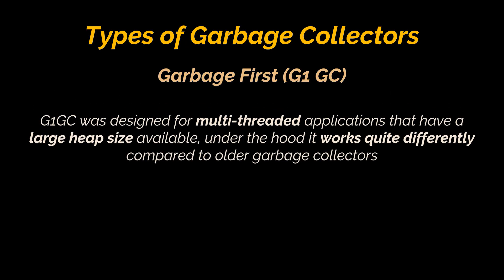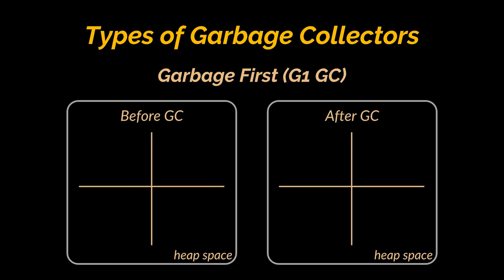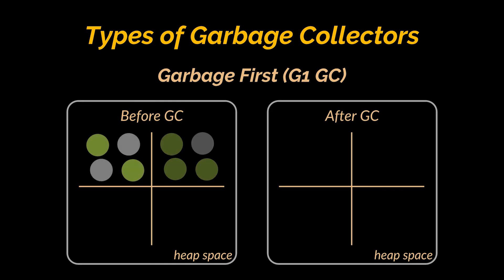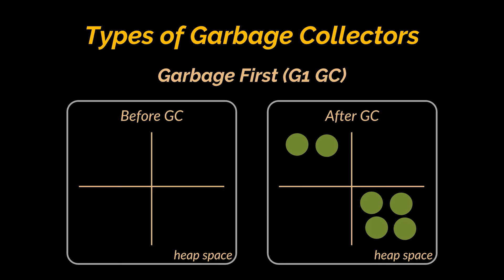The Garbage First, or G1GC, was chosen as the default collector by Java and was intended as a replacement for CMS. It was designed for multi-threaded applications with a large heap size. It is parallel and concurrent like CMS but works quite differently under the hood. Although G1 is generational, it does not have separate regions for young and old generations; instead, each generation is a set of regions, allowing flexible resizing of the young generation. It partitions the heap into equal-size regions and uses multiple threads to scan them. After the marking phase, G1 knows which regions contain the most garbage, and if minimal pause times are desired, G1 can choose to evacuate only a few regions — hence the name, Garbage First.